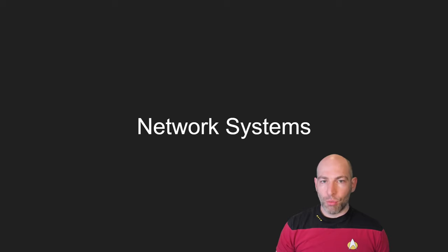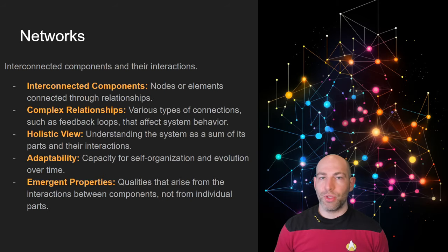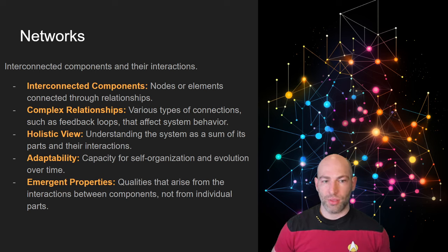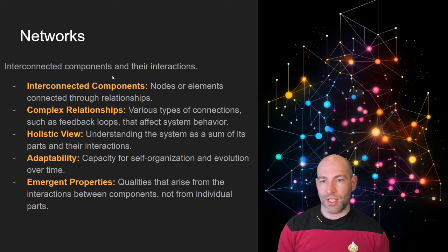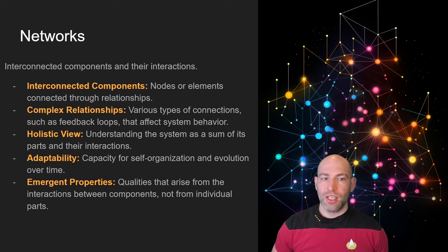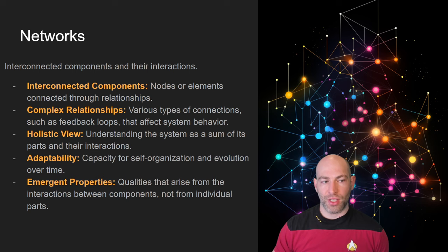First and foremost, network systems. What is a network? The definition of a network is simply interconnected components and their interactions. There are a few things that go into this definition. First is interconnected components — nodes or elements in a system. There are complex relationships between these different nodes, with different kinds of connections, feedback loops, and other things that create aggregate or emergent behaviors in the networks.